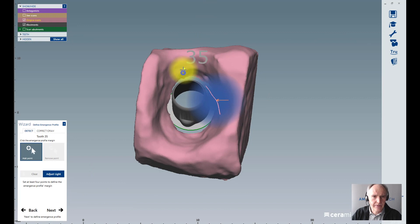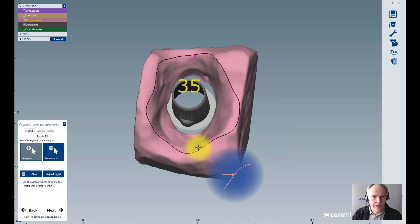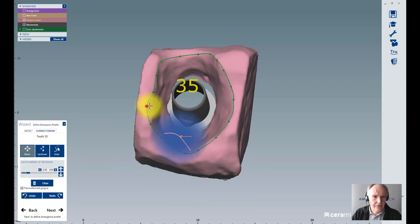Next step, I create the upper line for my emergence profile. I need at least four clicks - when you have five it's also okay. If you want to correct, you go to correct and draw and you can drag and drop these points to the right position you want to have. Then you click on next.